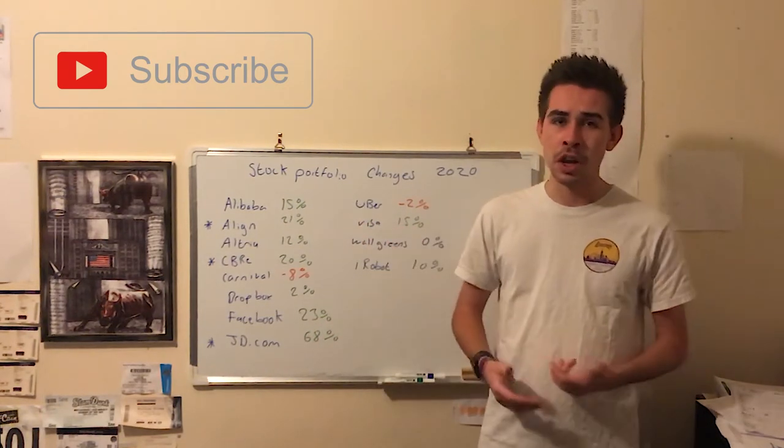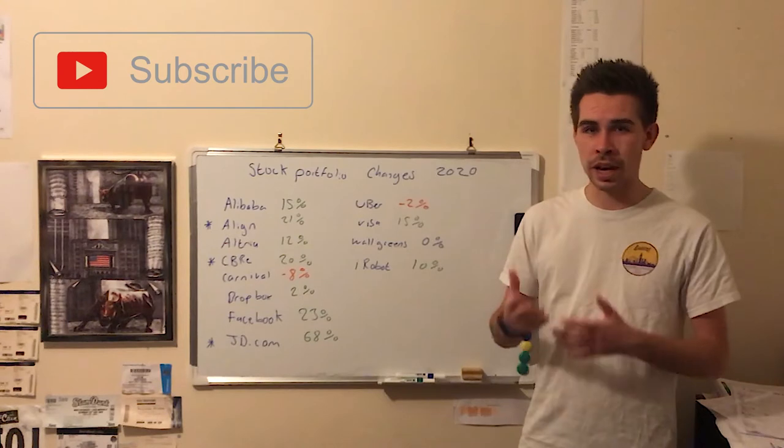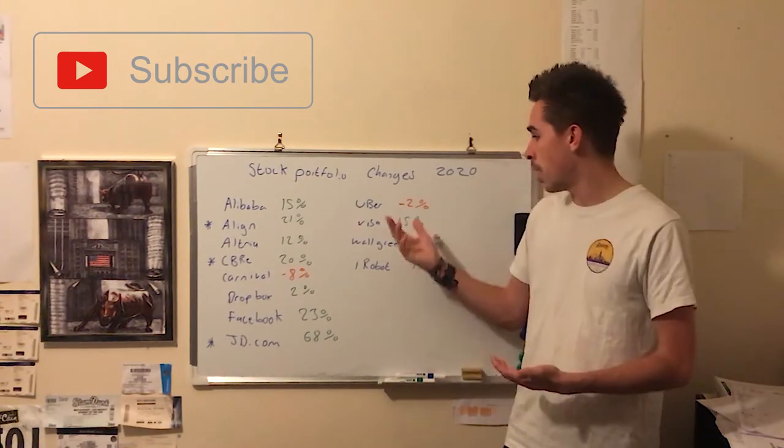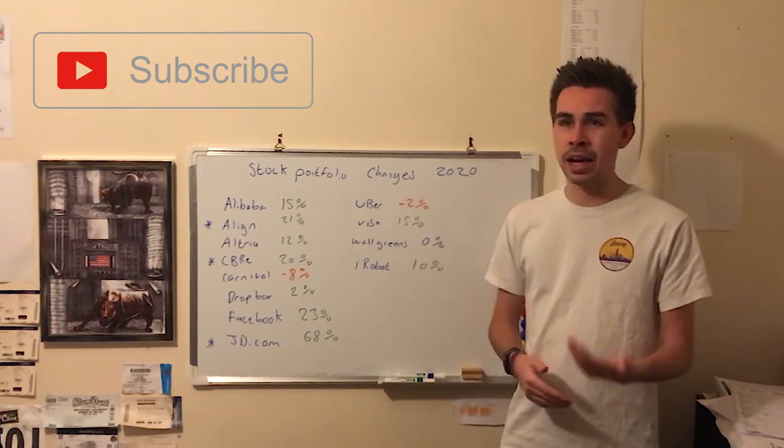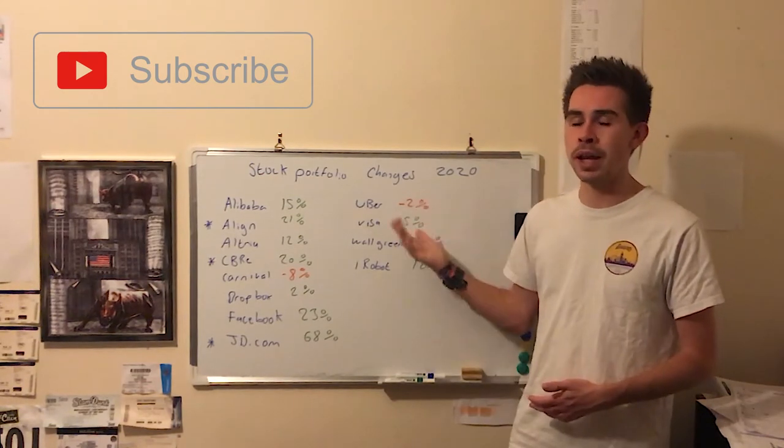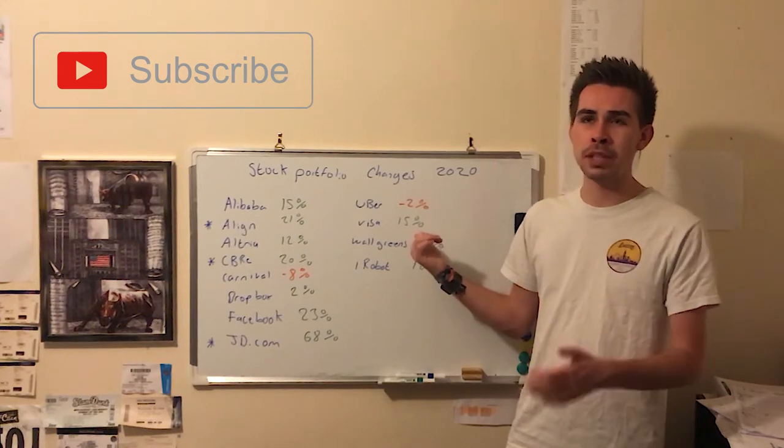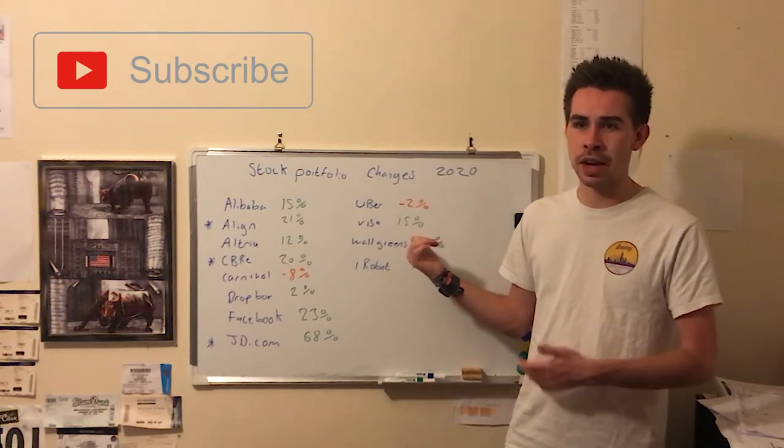Uber I'm down 2%, but Uber's the newest position that I kind of see myself holding for probably another two years at least. Visa I'm up 15%.